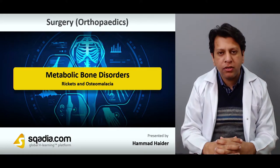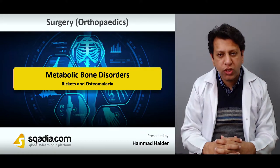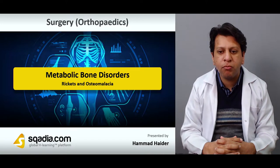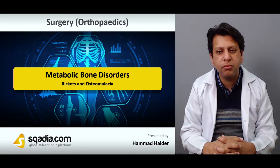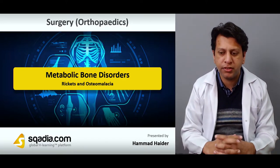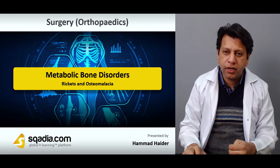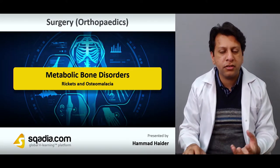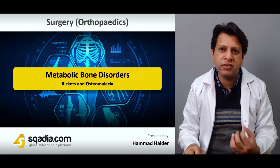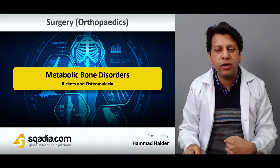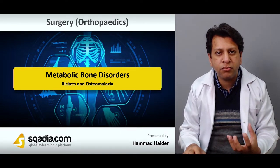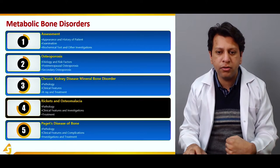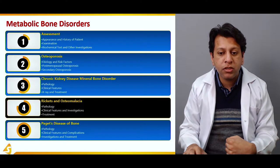Hello everyone, you are watching skydive.com and we are on metabolic bone disorders. In this section we'll be discussing rickets and osteomalacia. Rickets is the vitamin D deficiency condition of childhood, while osteomalacia is usually softening or weakening of bone in adulthood.